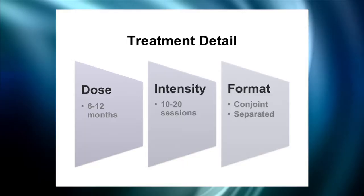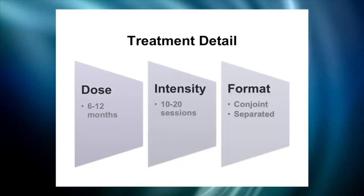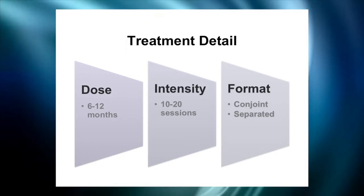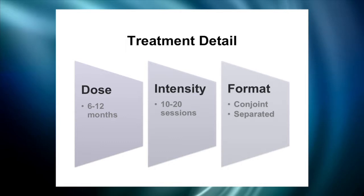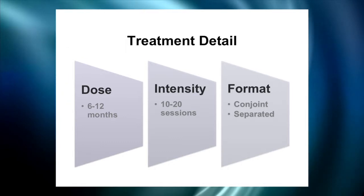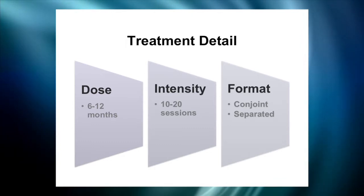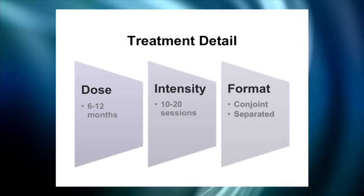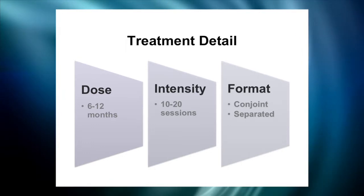The detail of this treatment model can vary depending on the context, the severity, and the age of the patient. The dose is typically six to twelve months at a session intensity of ten to twenty sessions as per the manual. For the most part it's conducted in a conjoint format, meaning that everyone who lives under the same roof would be called upon to attend the treatment. But it can also be implemented in a separated format, with the adolescent and parents working side by side but not all together in the room.